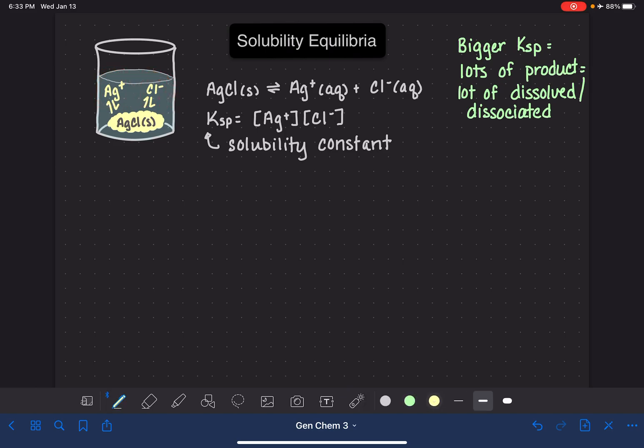And the word that we use to describe a substance that has a lot that has been dissolved or dissociated is soluble. So if something has a large KSP value, that just means that it is more soluble. Again, soluble is just referring to a substance's willingness to dissolve in solution.